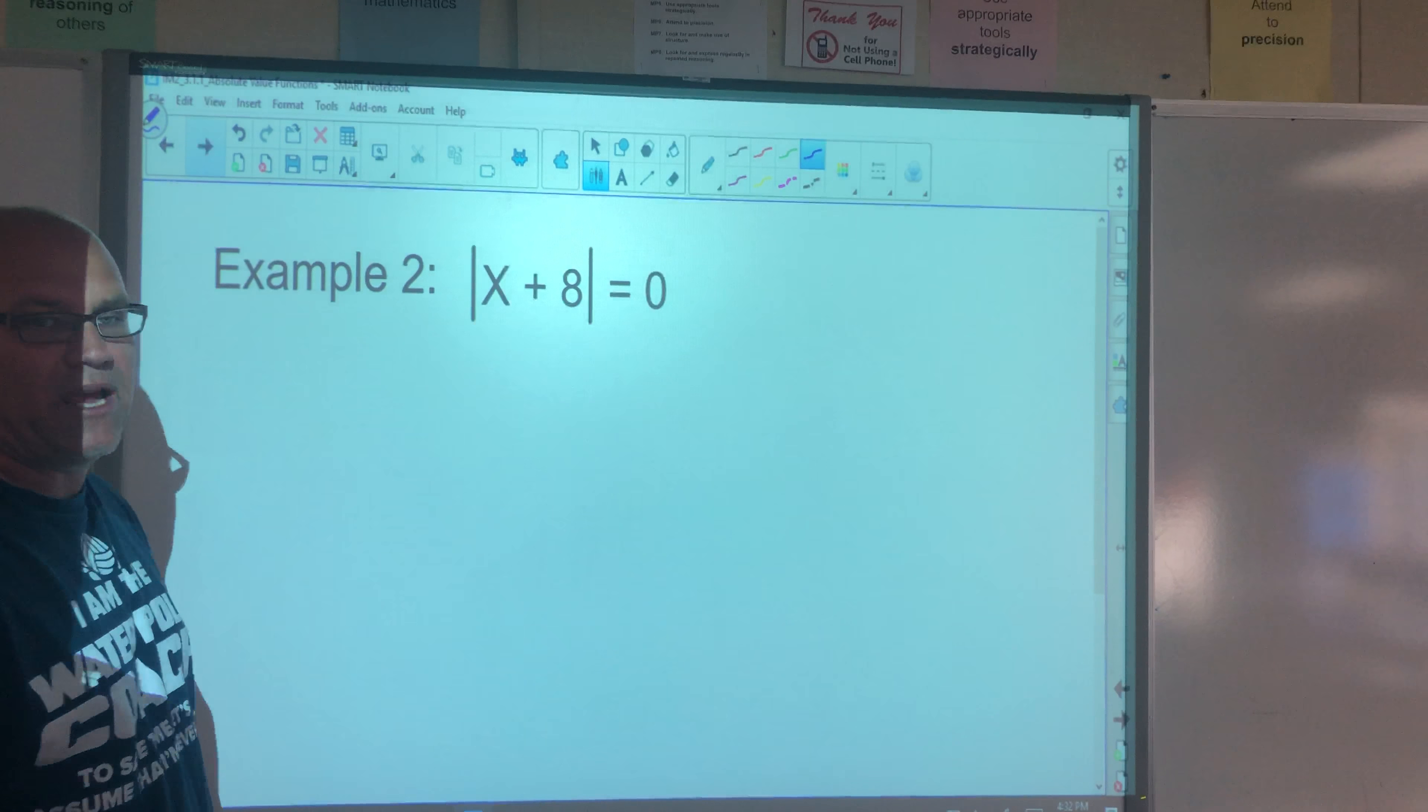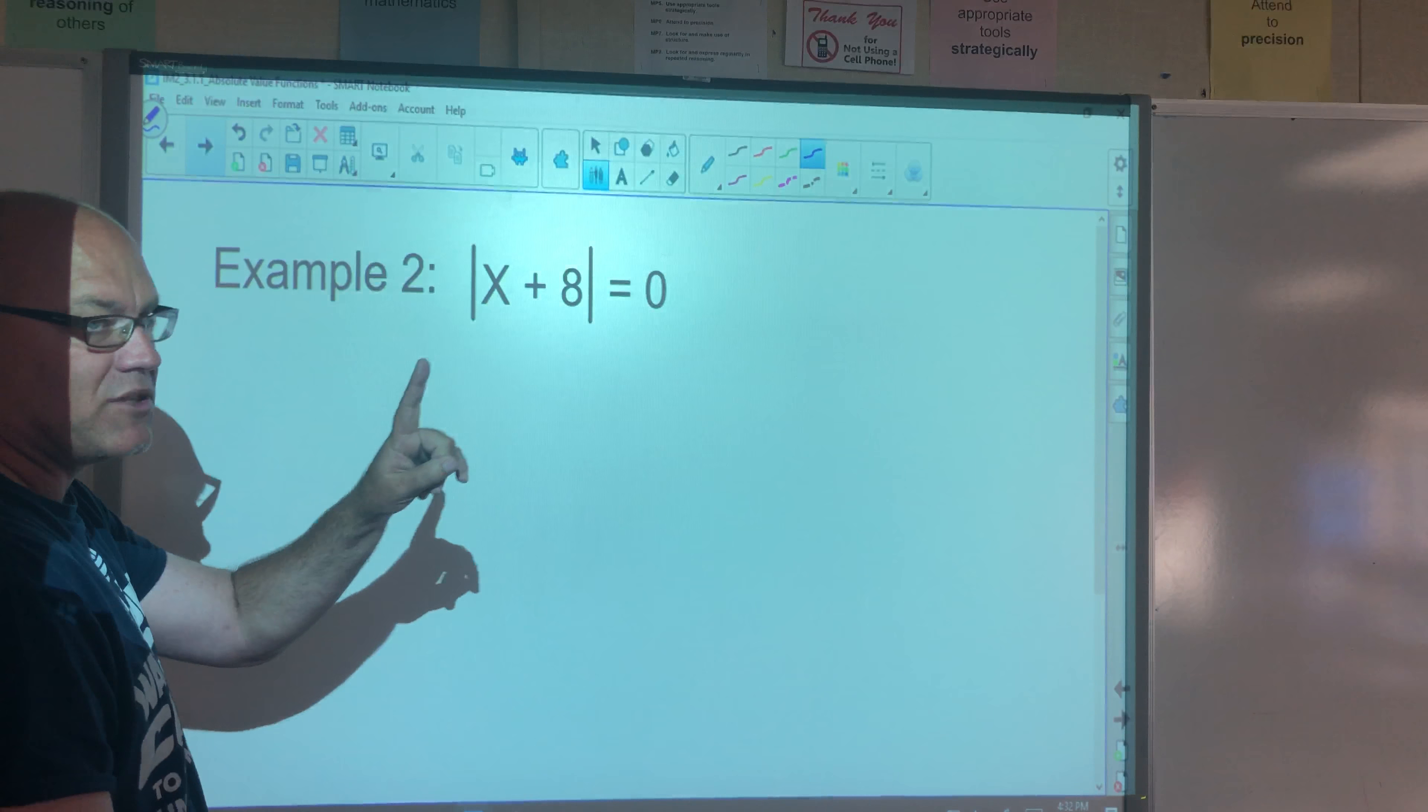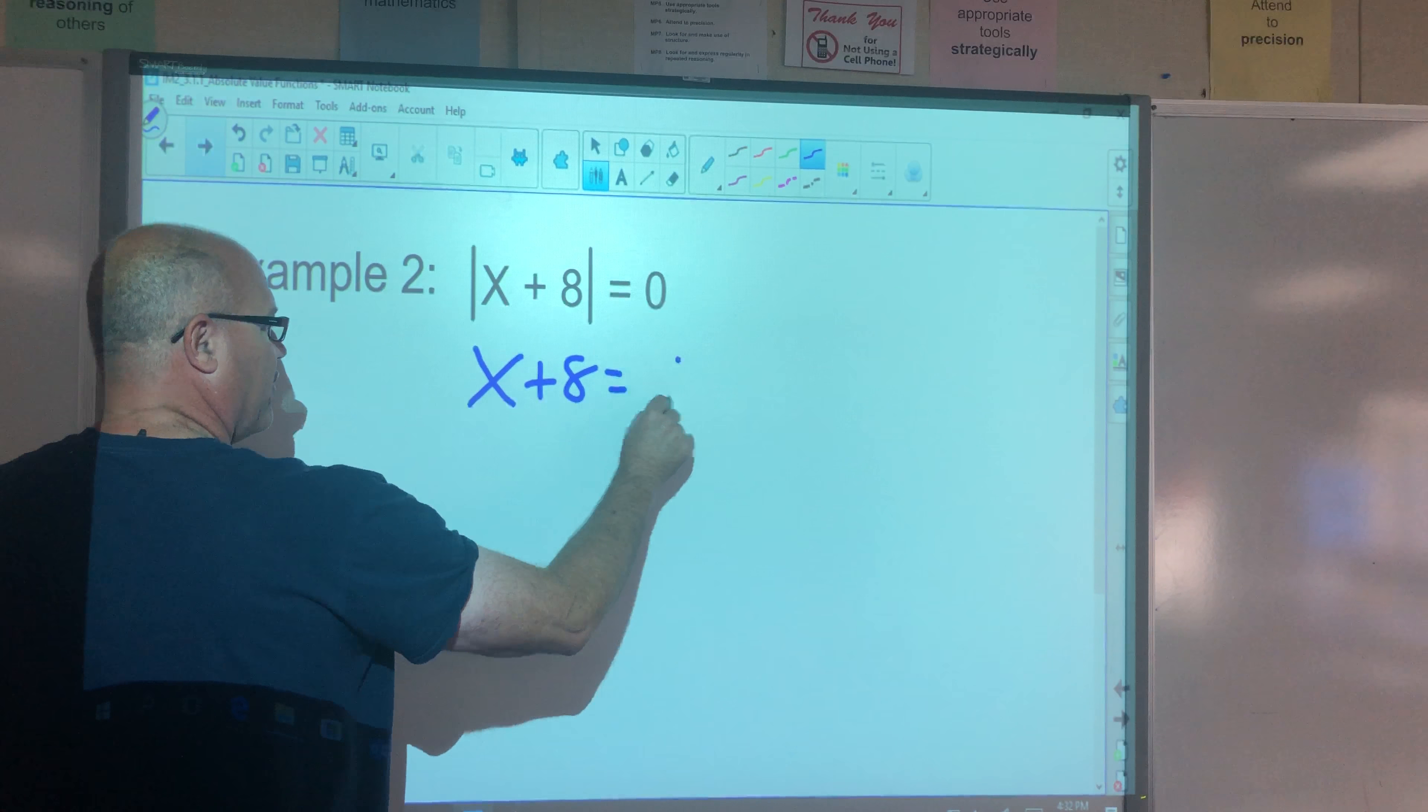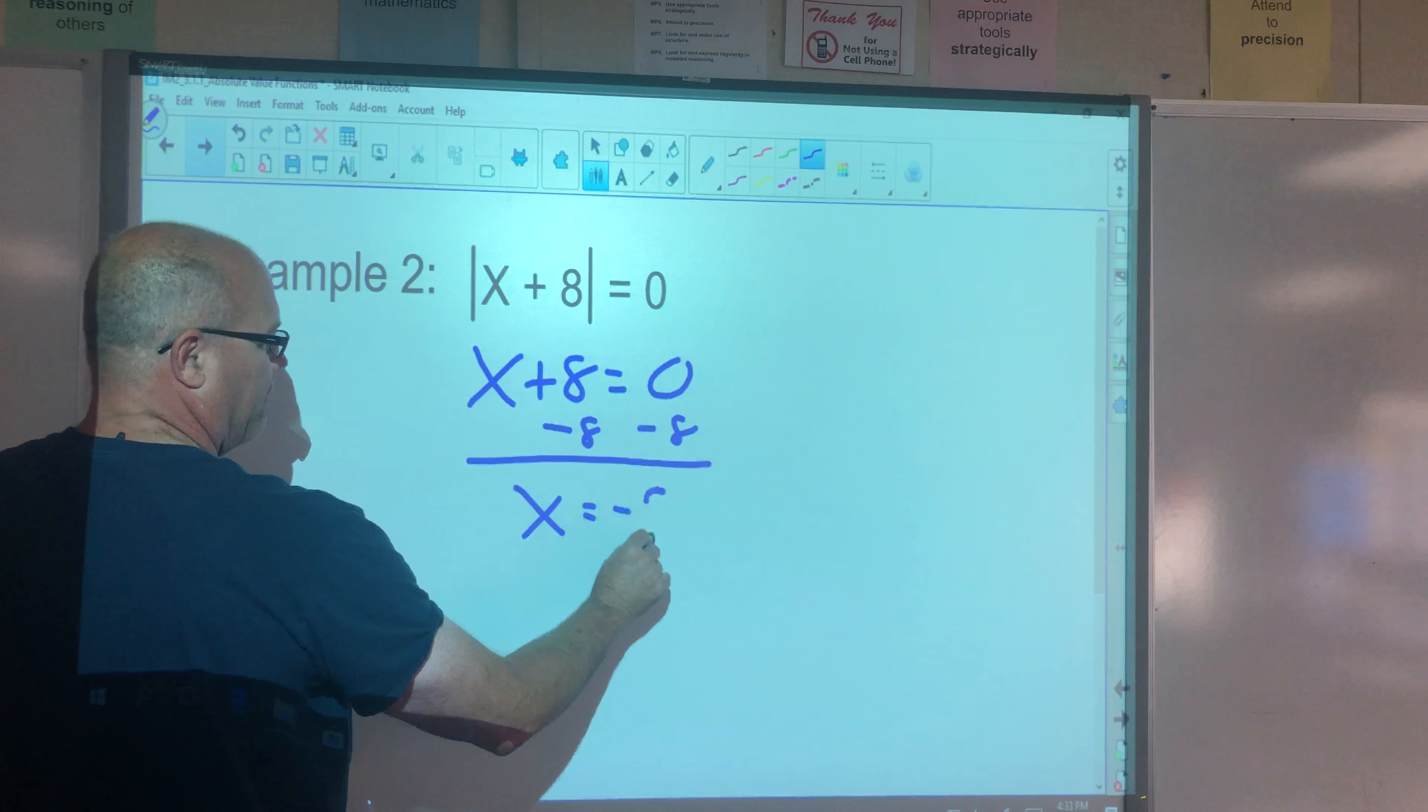So x plus 8 equals 0. I can't break it into two equations because 0 is neutral. You can't have a positive 0 and a negative 0, right? It's neutral. So there's going to be one solution here. We're going to just go x plus 8 equals 0, subtract 8 from both sides, and we'll get x equals negative 8.